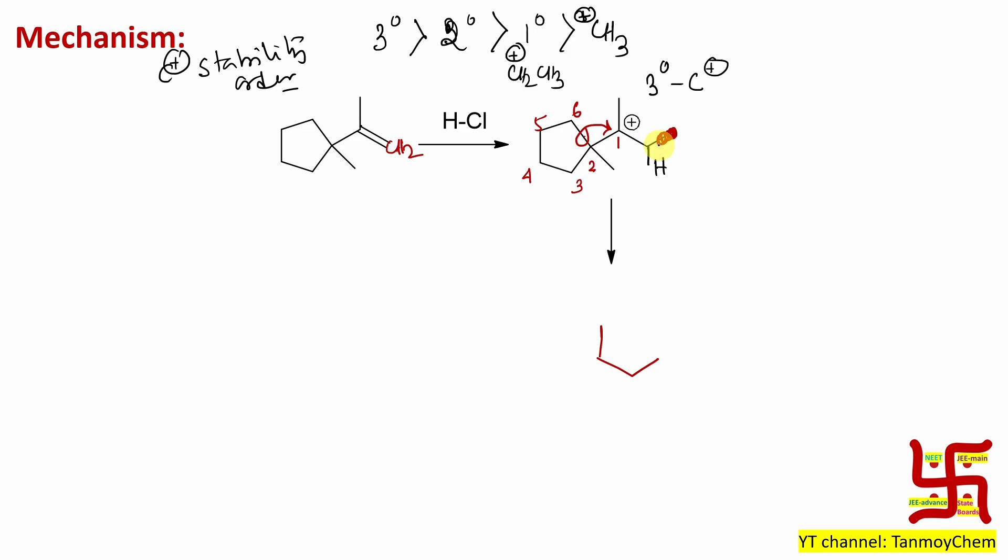On this side there is a CH2, but it will be considered as CH3. So number the carbons: this is 1, this is 2, this is 3 - by the way, 2 was attached with a methyl group - then 3, 4, 5, 6. Between 6 and 1 there is a bond formation.